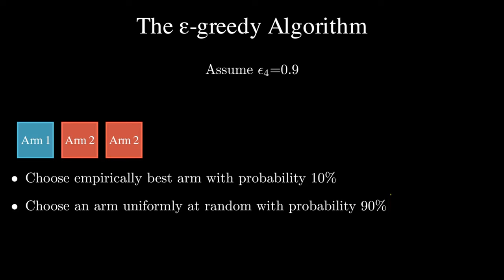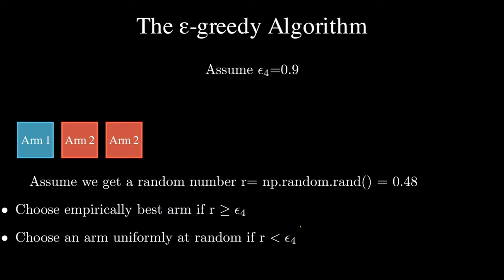Now assume at round 4, epsilon 4 is 0.9, which means that with 90% probability, we choose an arm at random, and 10% probability we choose the best arm. How do we choose? Let's get a random number from this random number generator. Here we get 0.48.